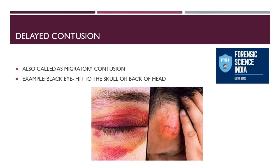Delayed contusion is also known as deep or migratory contusion. An example is a black eye — whenever a person is hit on the back of the skull, the contusion migrates to the front of the eye and, because of gravity, dips down, thereby forming a black eye or black contusion.